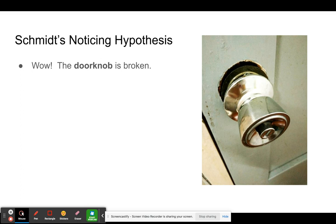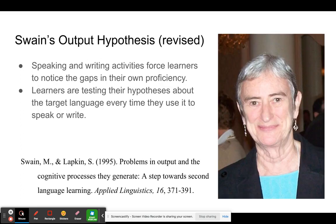In 1995, Swain applied Schmidt's ideas to revise her output hypothesis, moving further away from Krashen. She argued that challenging speaking or writing tasks caused learners to notice the gaps in their own proficiency. When people have to speak or write in a second language, they become more aware of the grammar and vocabulary they don't know but need, and that in turn causes them to pay more attention to the input around them to get those words and forms.